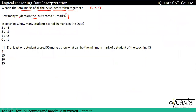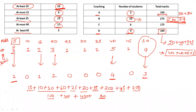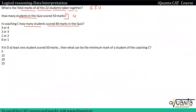Question: How many students scored fifty marks? We can see there are four students in coaching C. Question: How many students scored forty marks in the quiz? If we take the first case, one forty goes there and we know four forties remain — so three forties come here. If instead we took two forties in this case, then two forties come here. So the answer is either two or three.